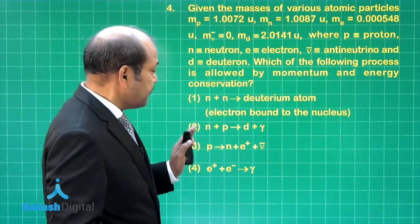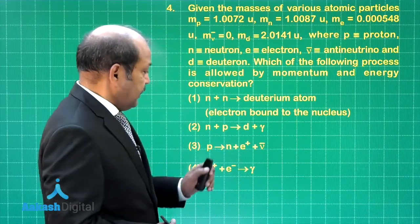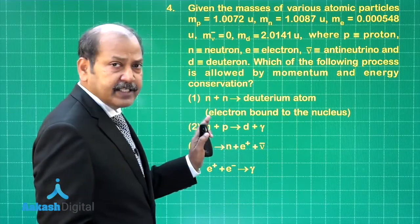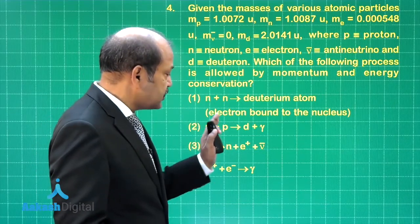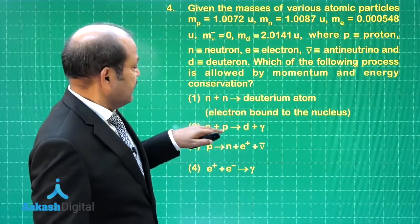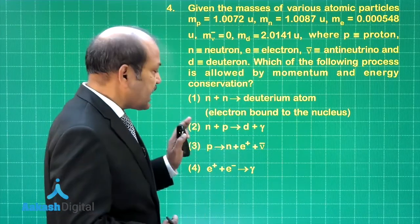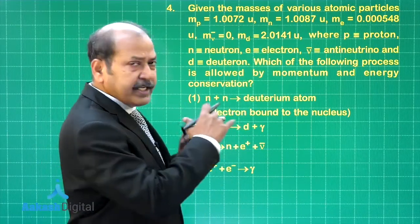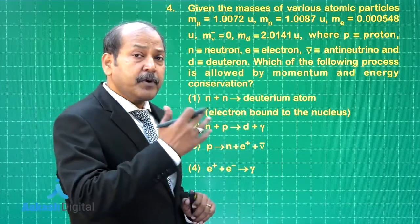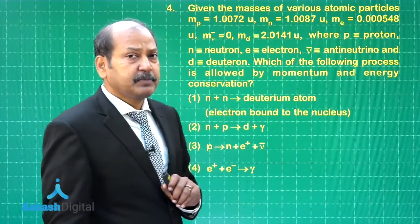If we look at n plus p equals d plus gamma, well here we see that the mass on the left hand side is coming out as greater than the mass on the right hand side. That is clearly calculated from the values provided. So this reaction is possible considering the energy and the momentum, because the Q value is going to be positive because mass of reactants is greater than mass of the product.